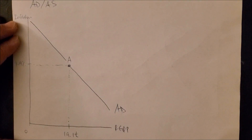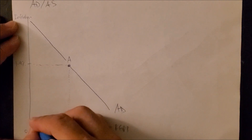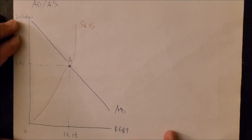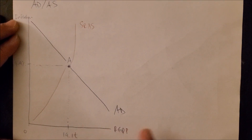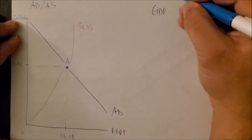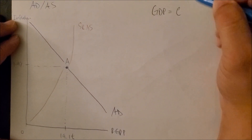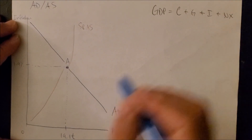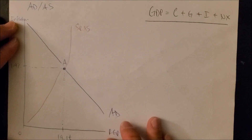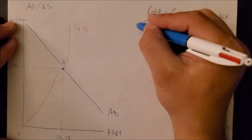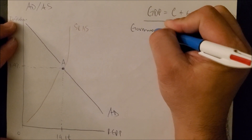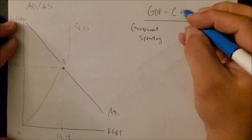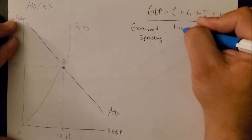We also draw our upward sloping SRAS short-run aggregate supply curve. We just looked at how consumer spending affects AD through the expenditure model, where GDP is a function of C plus G plus I plus NX. Now we can focus on the other three components, starting with government spending, which we can call fiscal policy.